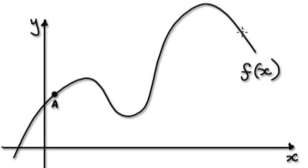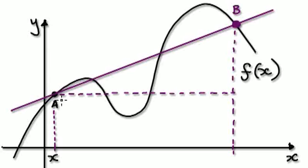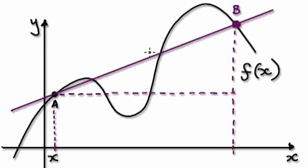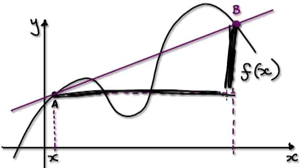Let's say B is right here. Our aim is to find out the gradient of this line. Here you've got a right-angled triangle. So our aim is to find out the gradient of this line. The gradient of this line is really this height here divided by this length here.